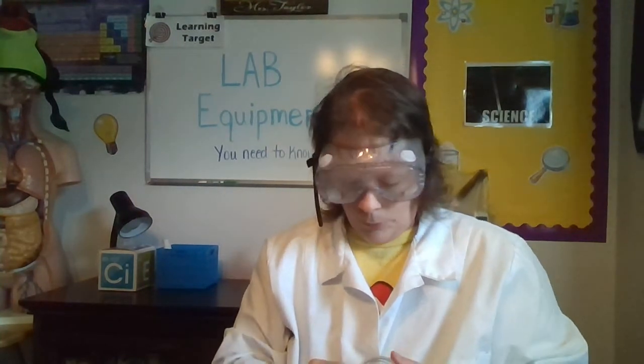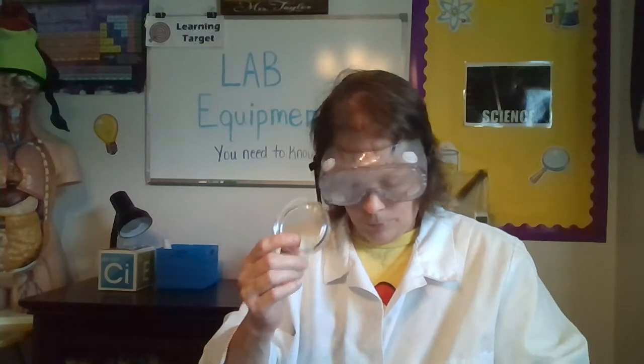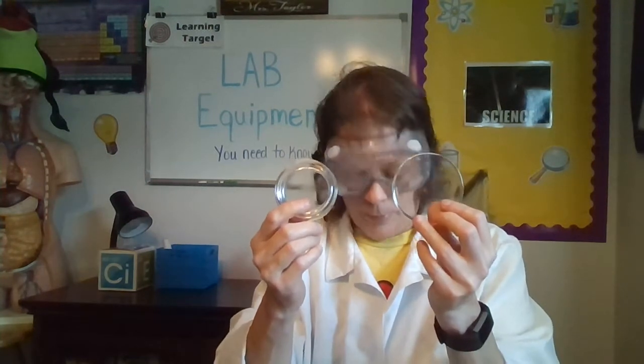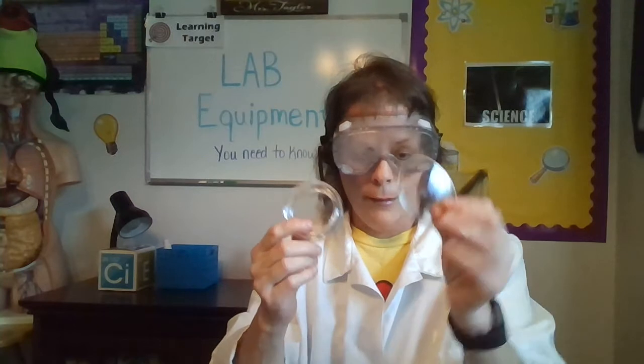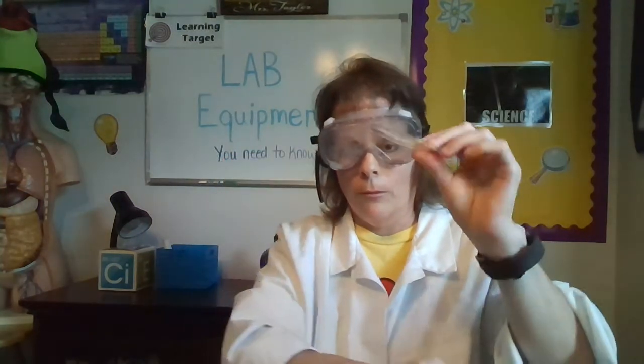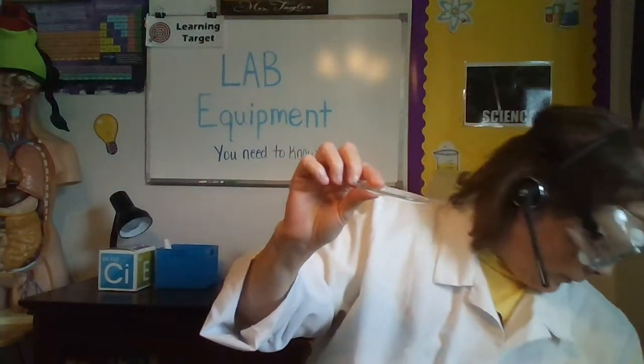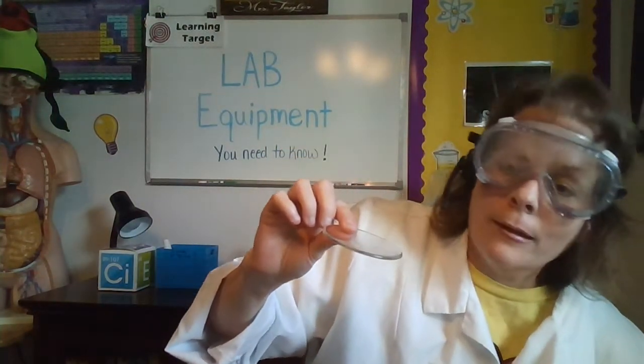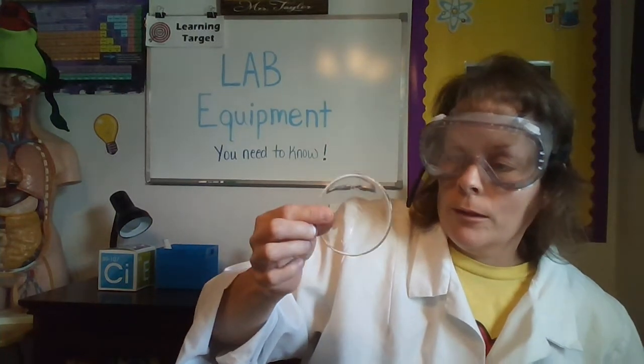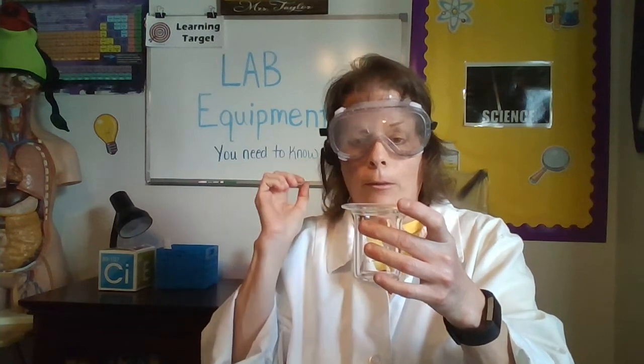I have a couple versions of watch glasses here. They are also used for evaporating, or you can be weighing things. They look a little different. This one's like a bowl almost; this is just kind of a curved piece of glass. But you can use this as a lid if you have one that's big enough. Like this little beaker right here, you could put it right on top and it serves as a lid.